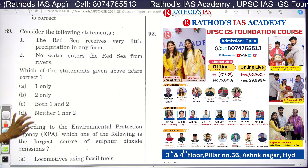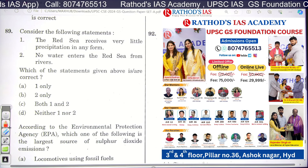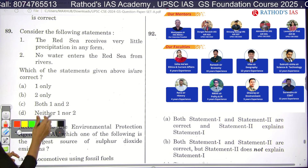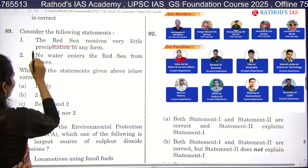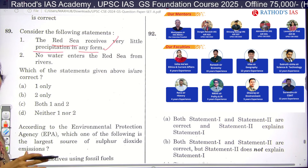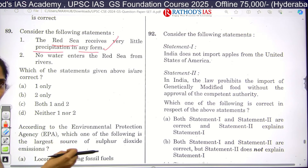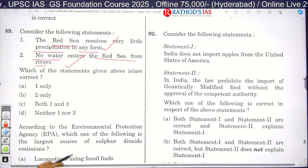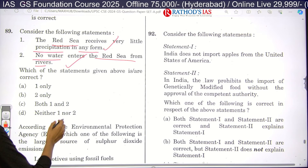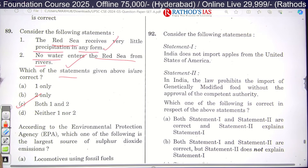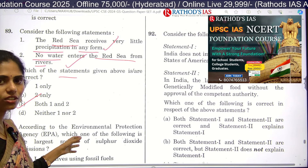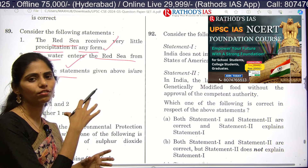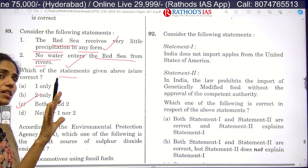Question 89 is about the Red Sea, also an expected topic. Statement one says the Red Sea receives very little rainfall — this is correct. Additionally, there is no river draining into the Red Sea, so no river water enters it. Both statements one and two are correct. This is a simple question and geography covering rivers, oceans, and seas under the mapping portion would cover these points.